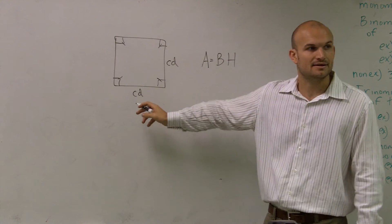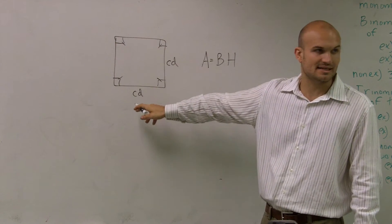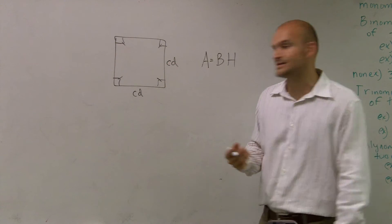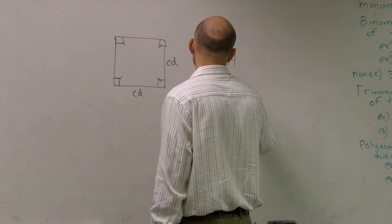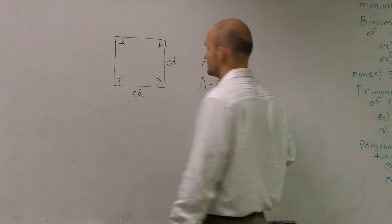Well, here we have cd. So, I'm going to say my base is cd and my height is again cd. So, my area equals cd times cd.